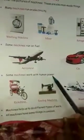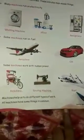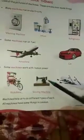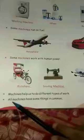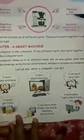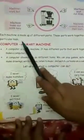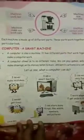Some machines work with human power, like rickshaw, steering machine, and boat — these all need human power. Machines help us to do different types of work. All machines have some things in common: machines work fast, machines save our time, machines make our work easy, machines cannot work on their own, and each machine is made up of different parts that work together to do a particular task.